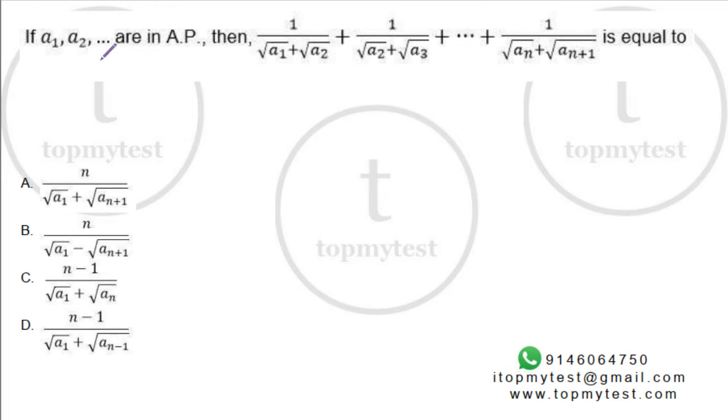A1, A2, A3 and so on are in AP, arithmetic progression. Then 1 divided by root A1 plus root A2, plus 1 divided by root A2 plus root A3, and so on, is equal to this. You'll have n plus 1 terms.